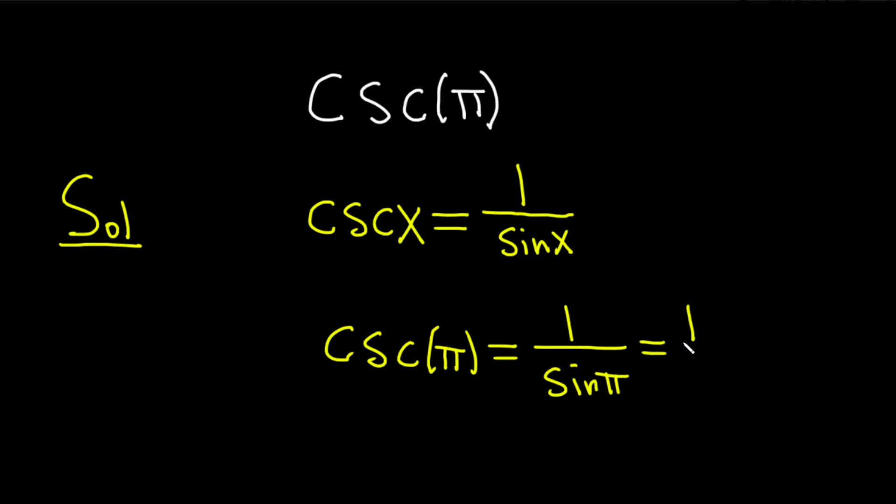But the sine of pi is 0, so this is equal to 1 over 0. And you cannot have 0 in the denominator like this. It can't be on the bottom, so this doesn't work.